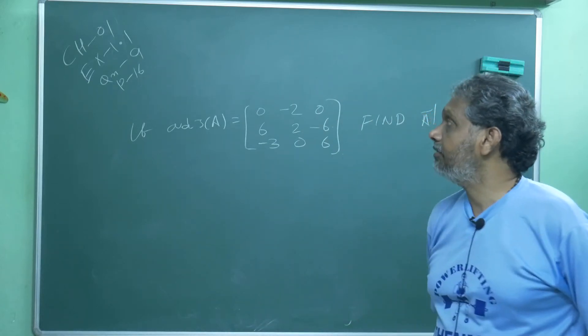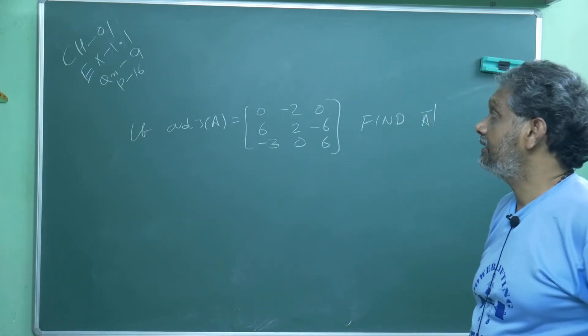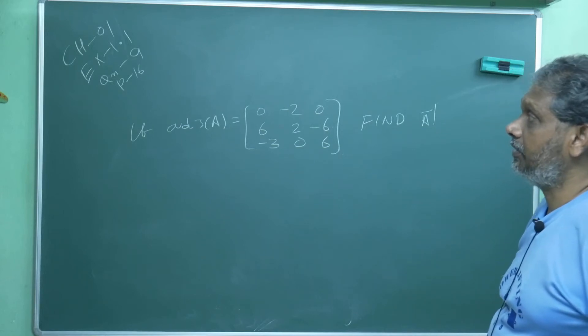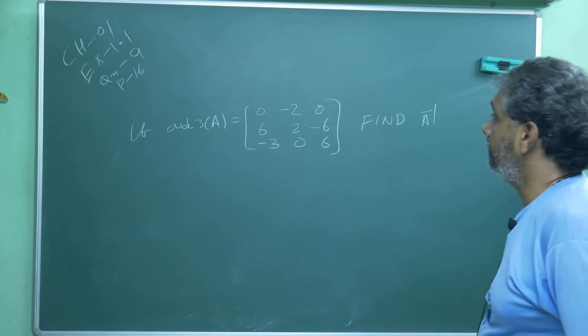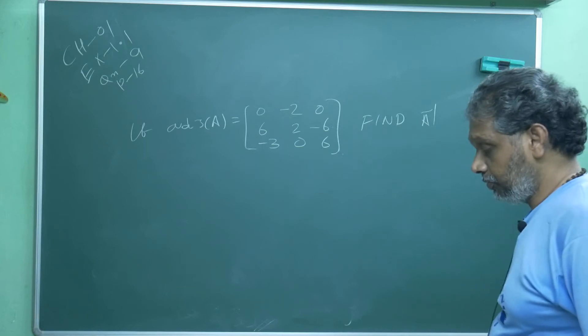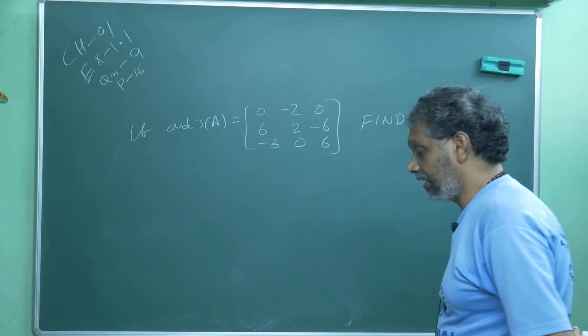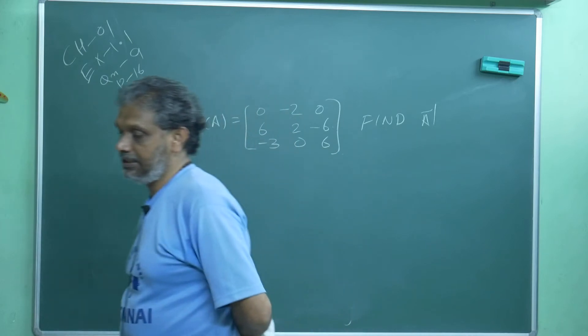In this video we discuss question number 9 in chapter 1, exercise 1.1, page number 16. Already I told you they will ask adjoint of A, they can ask find A or A inverse.